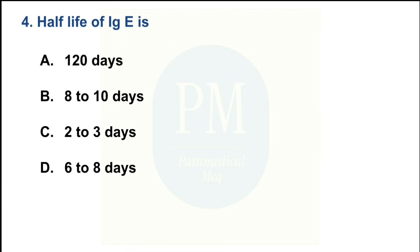Half-life of IgE is: Option A — 120 days; Option B — 8 to 10 days; Option C — 2 to 3 days; Option D — 6 to 8 days. The correct option is Option C: 2 to 3 days.